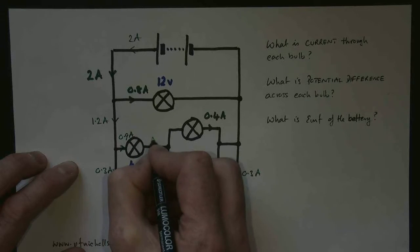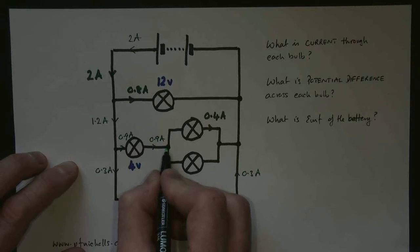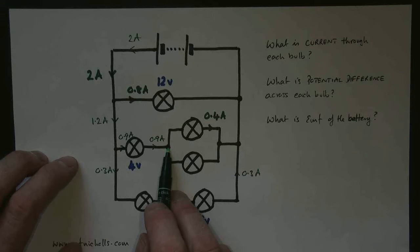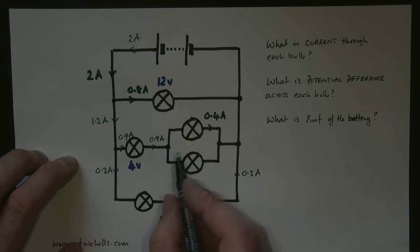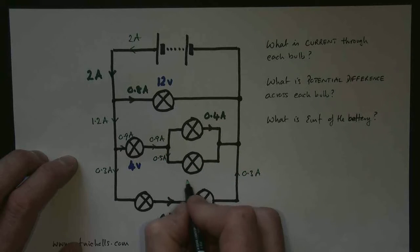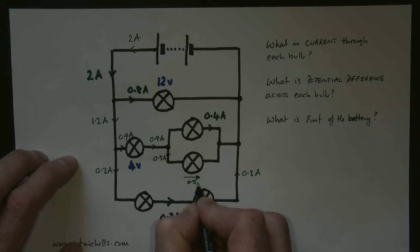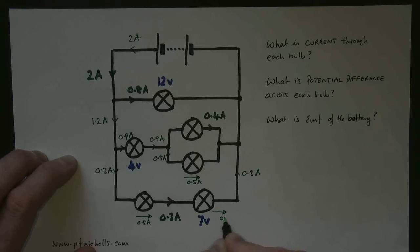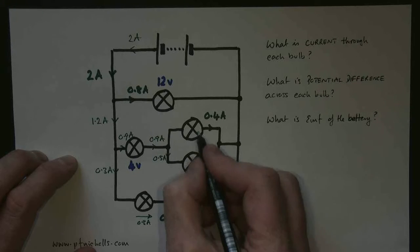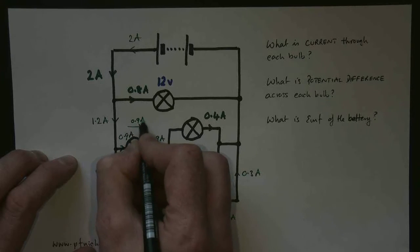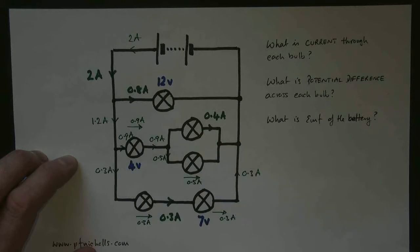0.9 amps must flow through that bulb — nothing gets used up in current, the current stays the same on each side of the bulb. At the next junction, 0.4 amps has gone one way, so therefore 0.5 amps must go the other way. So we know the current through that bulb is 0.5 amps, through this bulb is 0.3 amps, through this bulb is 0.3 amps, through this bulb is 0.4 amps (given), through this bulb is 0.9 amps, and through this bulb is 0.8 amps (also given).